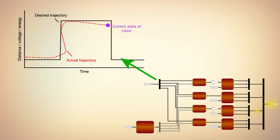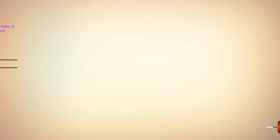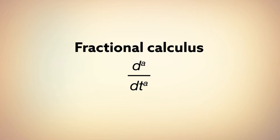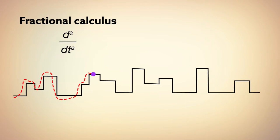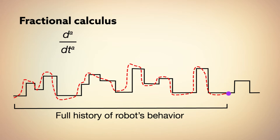To help implement this technique in practice, researchers called upon a brand of calculus known as fractional calculus. Unlike the classical version used in most control systems, fractional calculus provides a way of accounting for the full history of a robot's behavior. In effect, a fractional control system remembers all past errors to determine a robot's best next move.